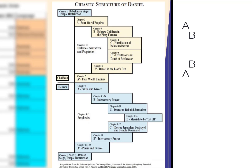Then the C portion of the chiasm: in chapter 4 the humiliation of Nebuchadnezzar, and chapter 5 the overthrow and death of Belshazzar — both of those being Gentiles. The second major chiasm is in Hebrew, covering chapters 8 through 11.